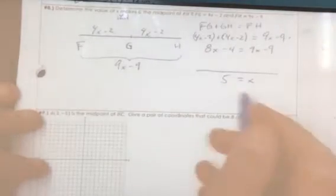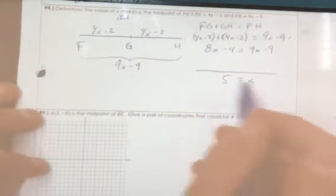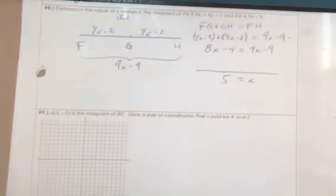And in this case we're done because it said determine the value of x that makes this true. And our answer x equals 5. Good, careful reading.